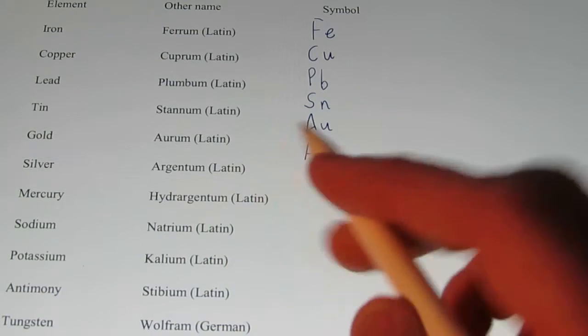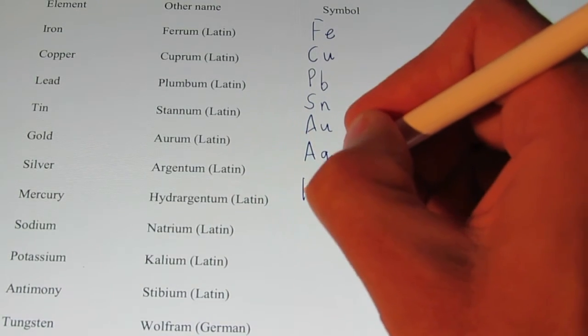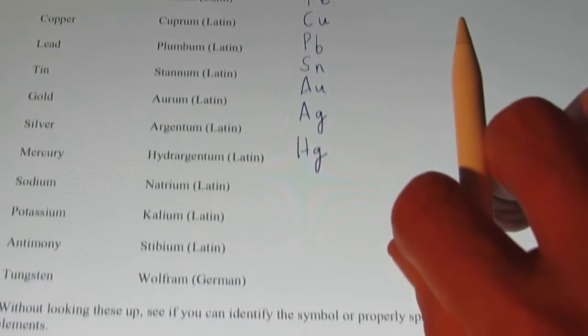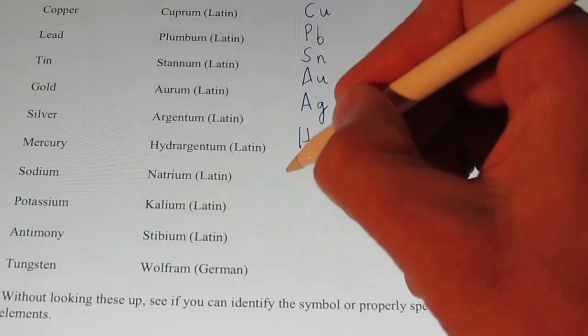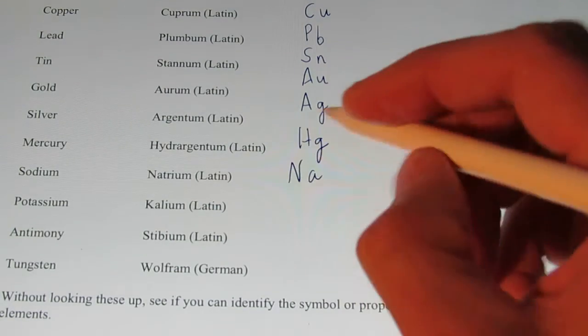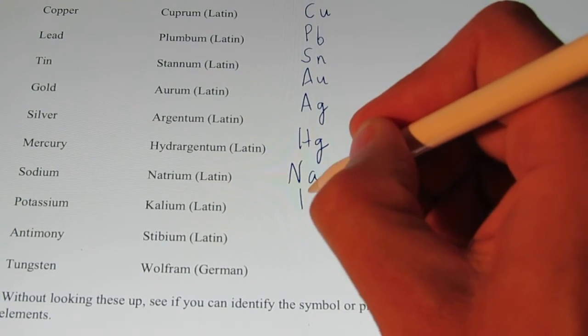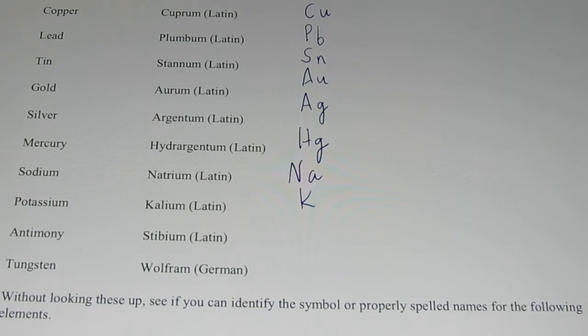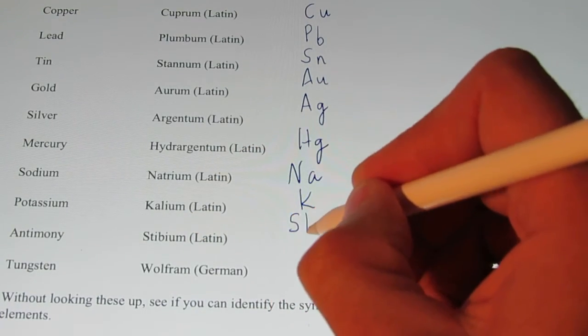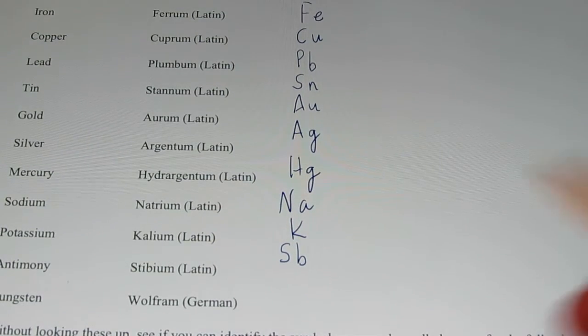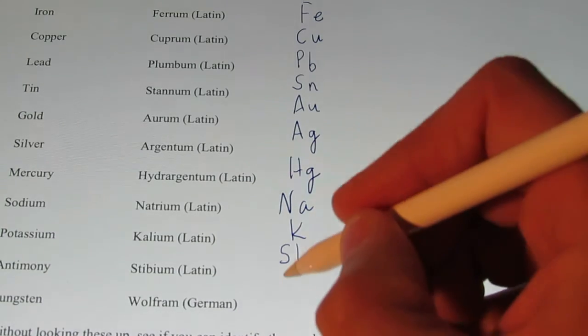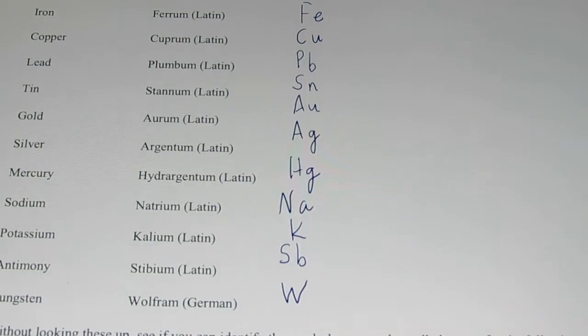Mercury, hydra-argentum. So the symbol for that is H-G. Sodium, comes from the Latin name natrium. Its symbol is N-A. Potassium, its symbol is K. Antimony, comes from the Latin name stibium. Its symbol is S-B. And tungsten, comes from the German name Wolfram. Its symbol is W.